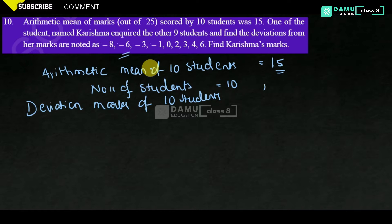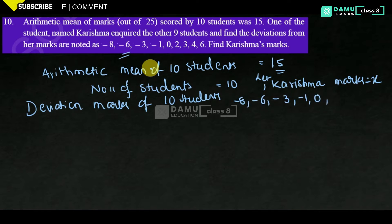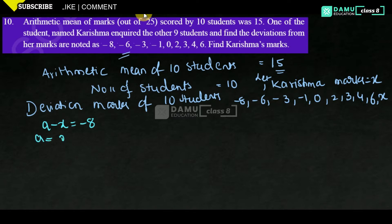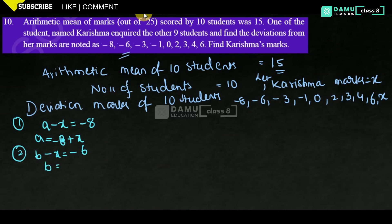Let Karishma's marks be x. The 10 deviation values are: minus 8, minus 6, minus 3, minus 1, 0, 2, 3, 4, 6. If you subtract Karishma's marks from the first student's marks you get minus 8, so the first student's marks will be minus 8 plus x. Similarly, the second student's marks will be minus 6 plus x.